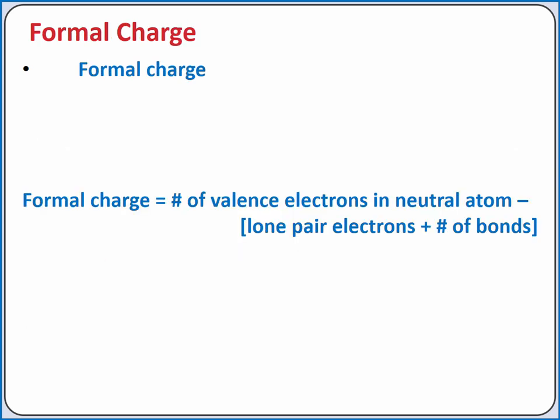The formal charge is the charge an atom would have within a Lewis structure if lone pairs of electrons are counted as being only on the atom in question, and the electrons within bonds are split evenly between the two atoms. To calculate the formal charge on a particular atom, we take the number of valence electrons in the neutral atom, subtract the number of lone pairs of electrons on that atom, and the number of bonds with that atom.